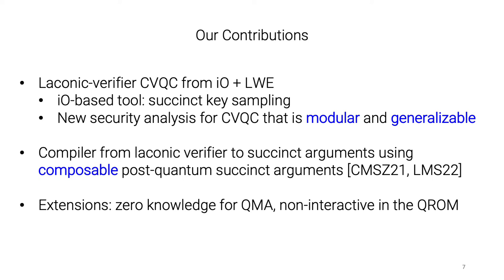The reason that IO is used is that IO allows us to build a tool that we call a succinct key sampler, which gives us a way to have a compressed representation of a large number of essentially independent public keys that we define formally in the paper. This IO-based tool is then plugged into a generic template for building classically verifiable quantum computation, and then we give a new security proof of this generic type of protocol that is modular and generalizable. In particular, it applies to the protocol with succinct public keys, which is what we use in our main result.